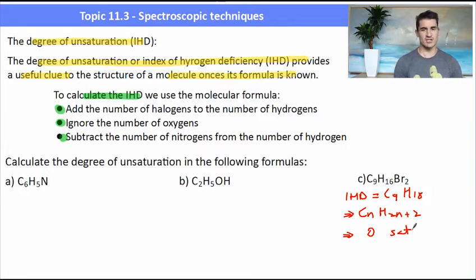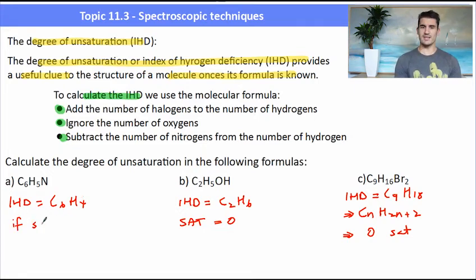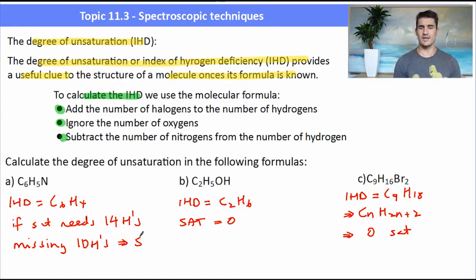For the second one we have C2H6. We ignore the oxygens, add the hydrogen, so again that appears like an alkane - it is saturated. The last one is a little bit challenging. We subtract the number of nitrogens from the number of hydrogens, leaving us with C6H4. This appears to have a lot of double bonds, a lot of unsaturation. The easiest way to think about it is if it was saturated it would need to have 14 hydrogens, or it would need another 10. So that means we must have a large number of double bonds. It's missing 10 hydrogens, and for each two hydrogens we have one double bond. So that means that molecule would have five double bonds. That could be a ring and a double bond, or it could be just five double bonds.